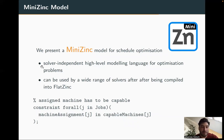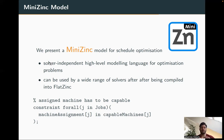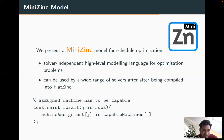We also present a MiniZinc model for schedule optimization. MiniZinc is a high-level, solver-independent modeling language often used for optimization problems, and it can be used by a wide range of MIP and CP solvers after compiling to FlatZinc. Traditionally MiniZinc is not considered a knowledge representation and reasoning language — more logic-based formalisms are usually used for that — nevertheless it allows requirements to be represented in a human-readable, concise, and declarative form. For example, as illustrated here, a MiniZinc constraint can express that for all jobs the machine assignment must be taken from a capable machine.